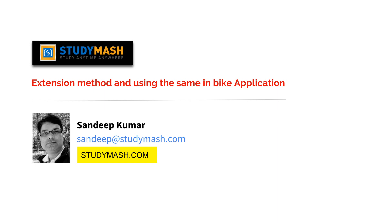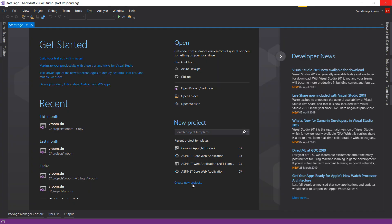Extension methods are a new feature introduced in C#, which enables us to add new methods or functions to existing types without creating a new derived type, recompiling, or even modifying the original types. Let's understand it by an example.